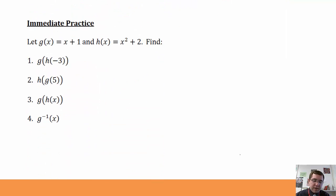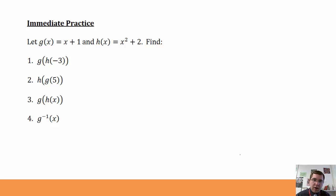Here are your immediate practice problems. Let g of x be x plus 1 and h of x be x squared plus 2. Find g of h of negative 3 by plugging negative 3 into h first, then taking that output into g. Find h of g of 5. Find g of h of x — writing that new function. Find g inverse of x, the inverse of g, which is a one-to-one function. That is the end of section 10.3.